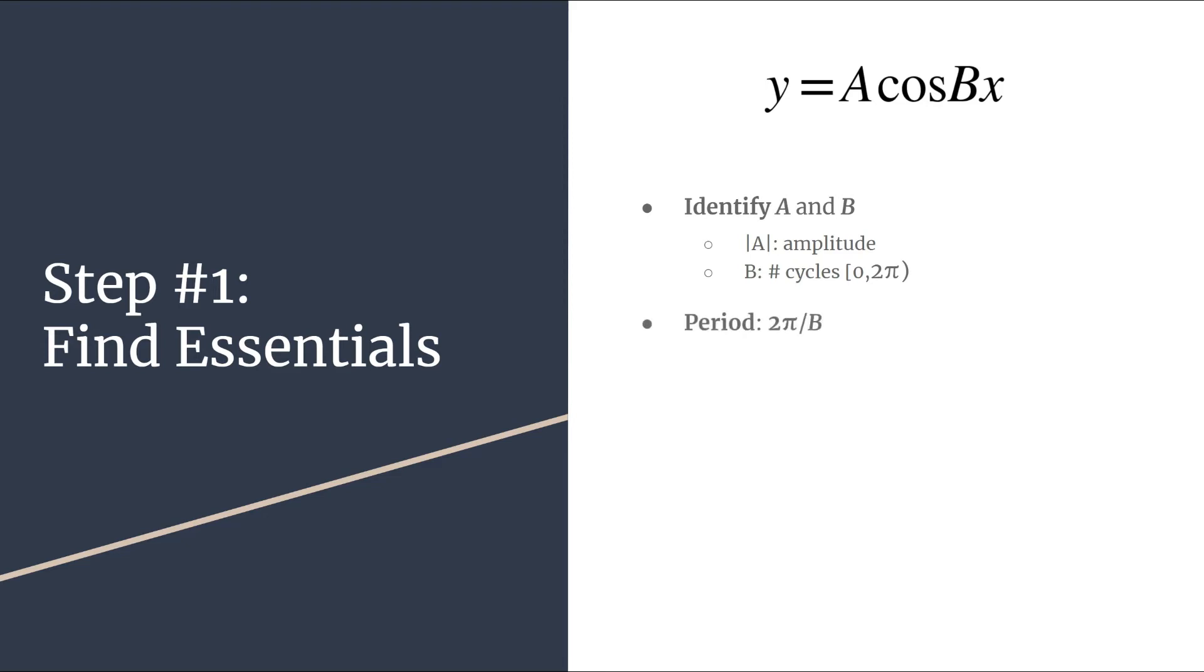The next essential information that you should find is the period. And for any basic cosine graph, you'll simply calculate two pi divided by B. And that tells you the length of a horizontal cycle.